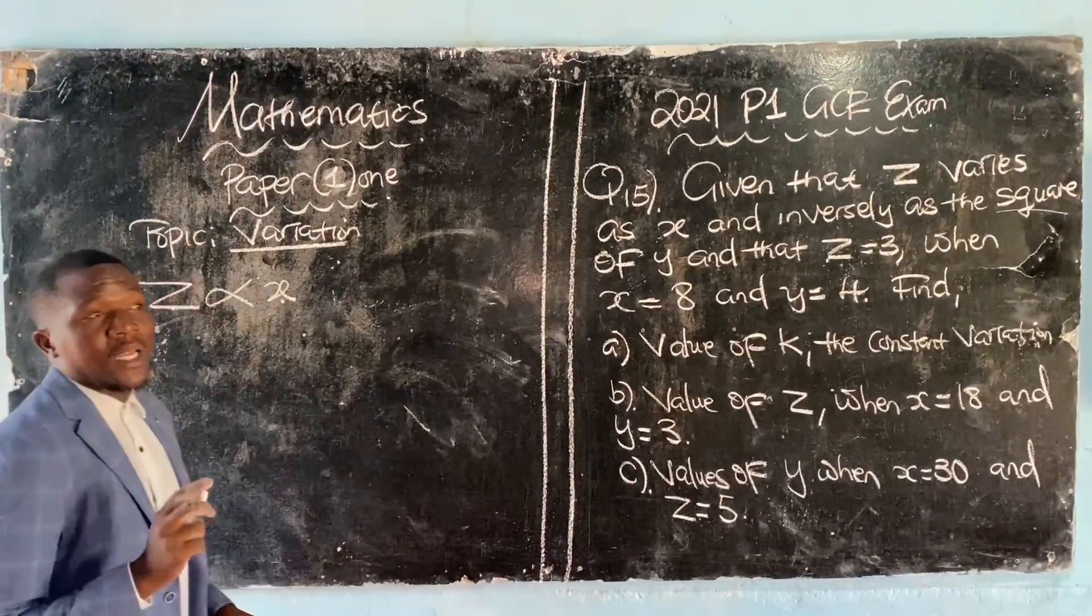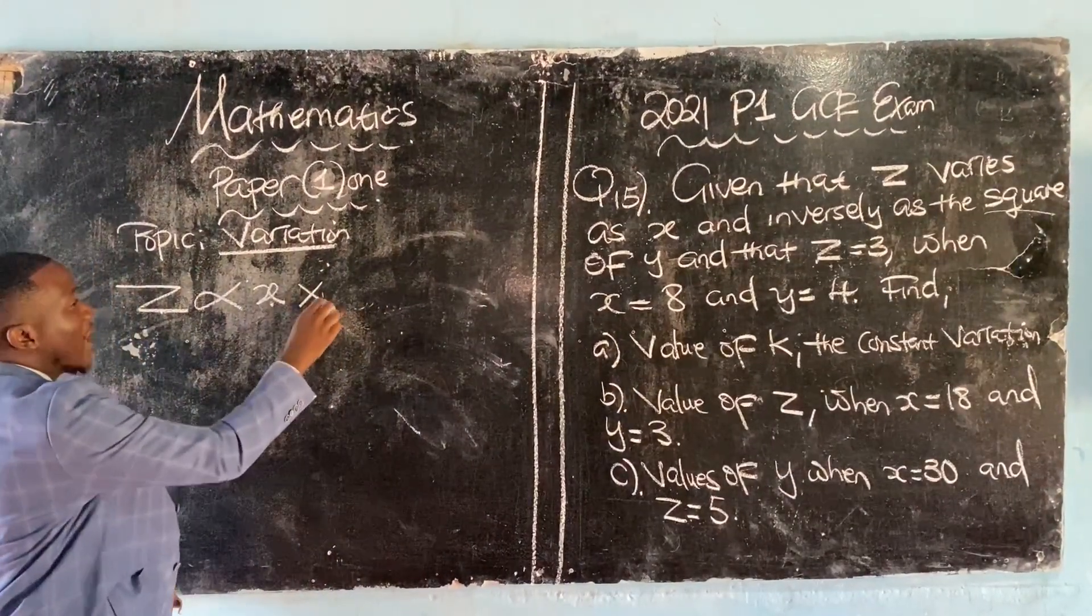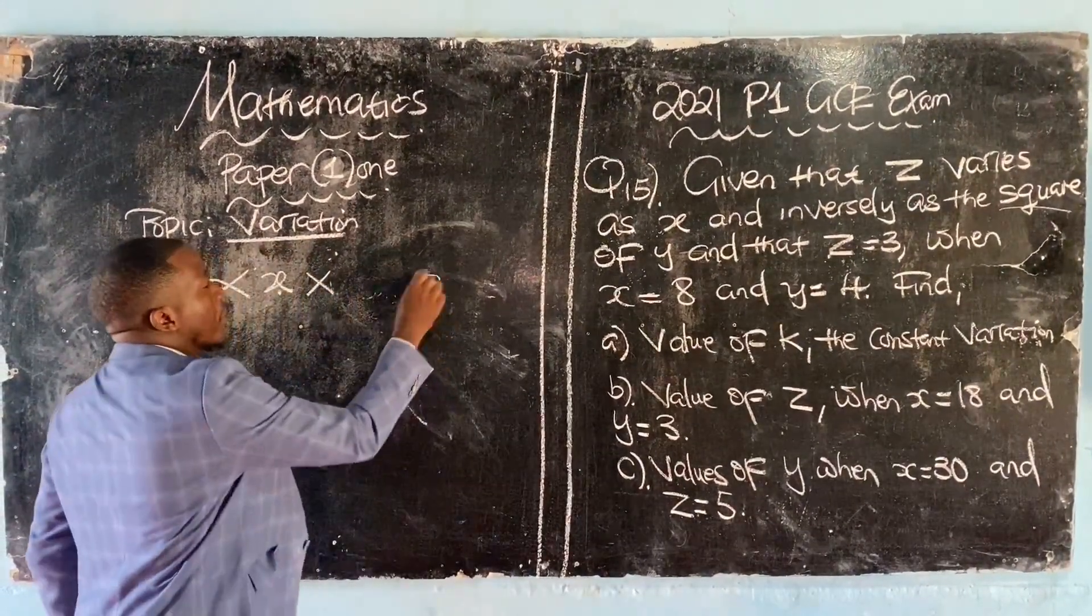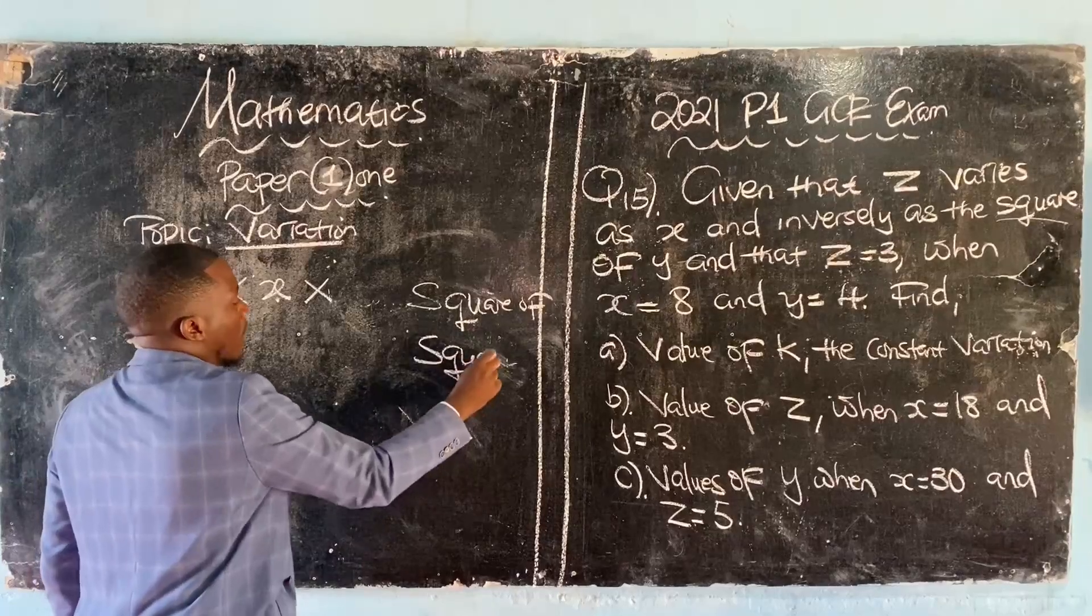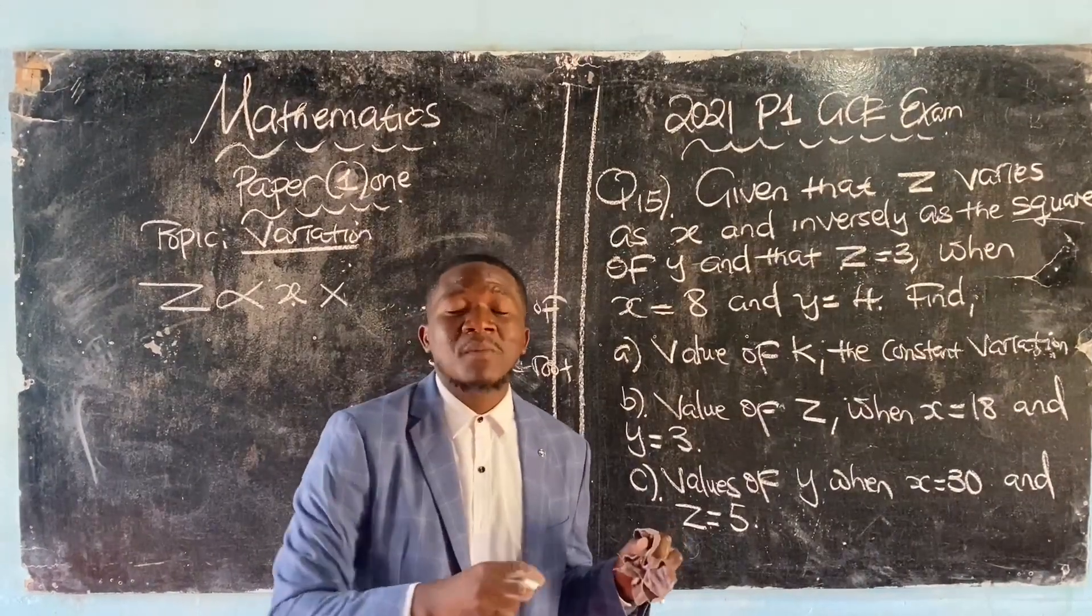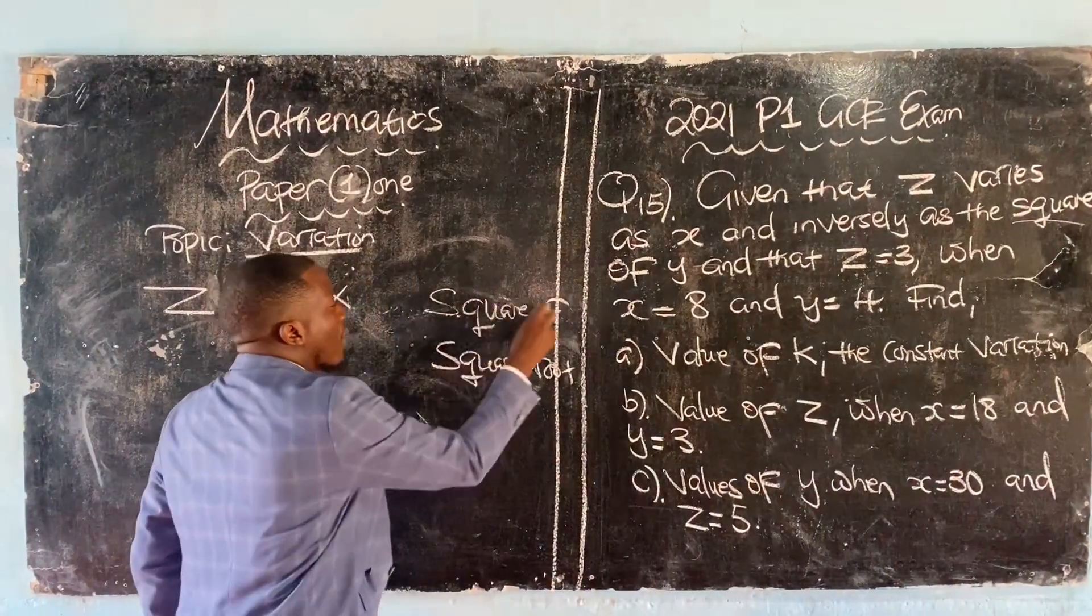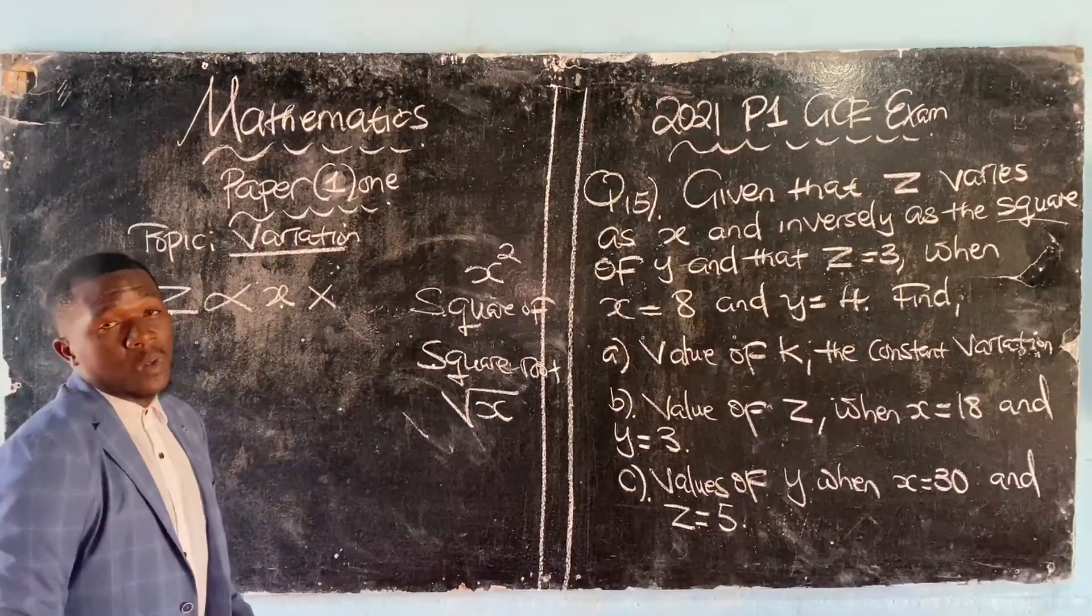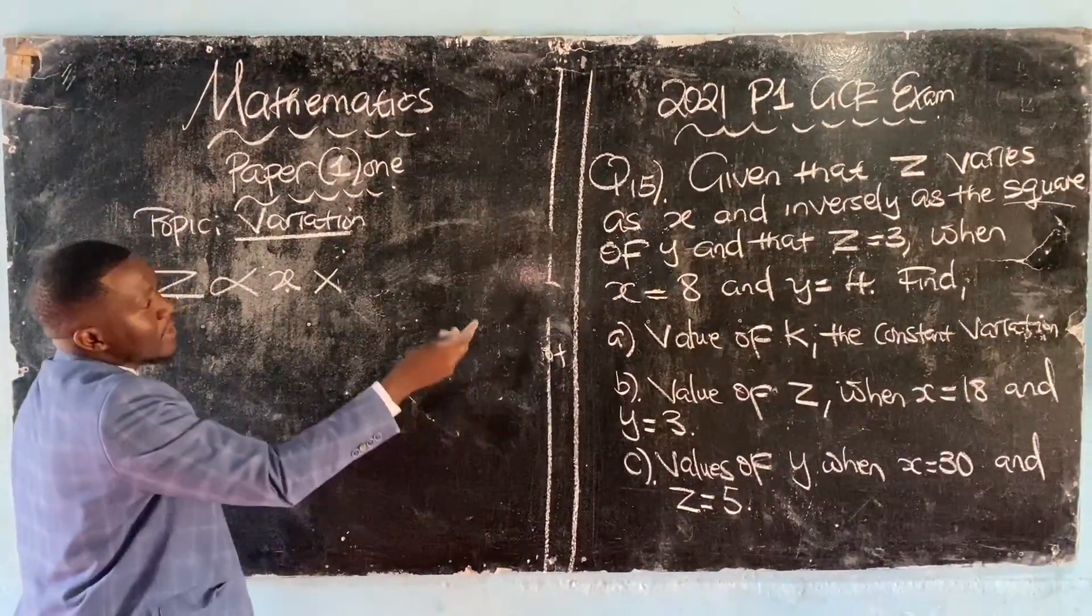And inversely as the square of y. Inverse simply means the thing you are talking about is a fraction. But there is a big difference between square of and square root. Square of means the variable is raised to the power of two. Square root means x under the square root symbol.